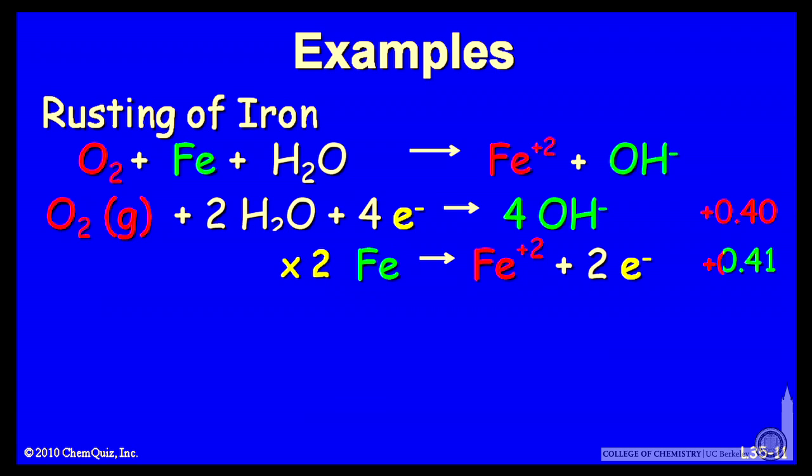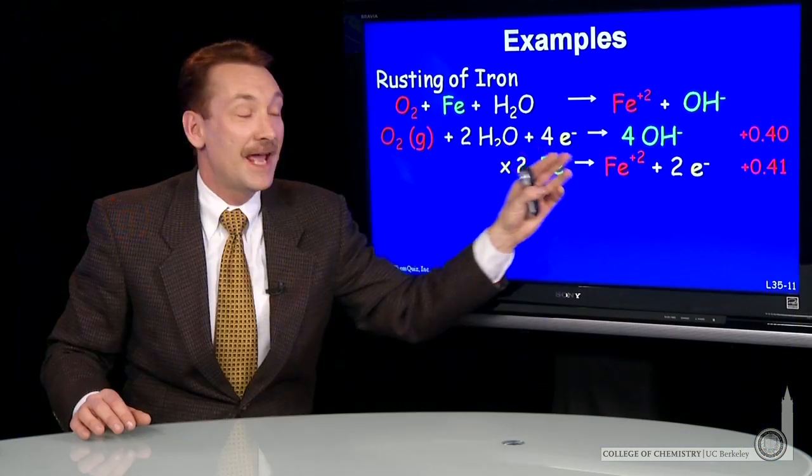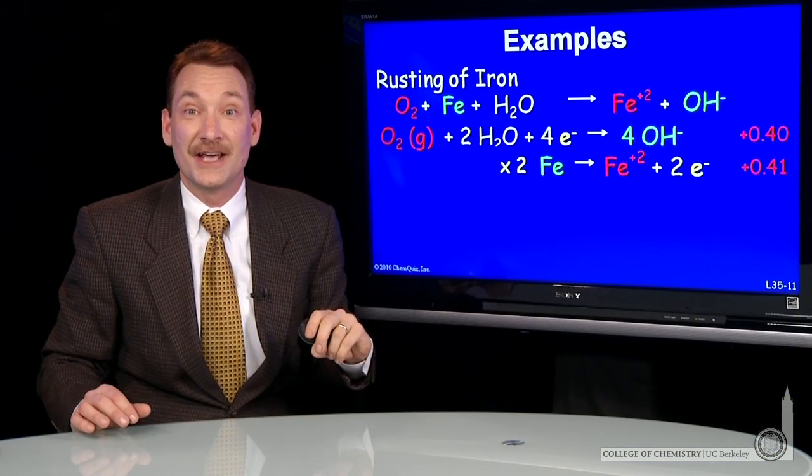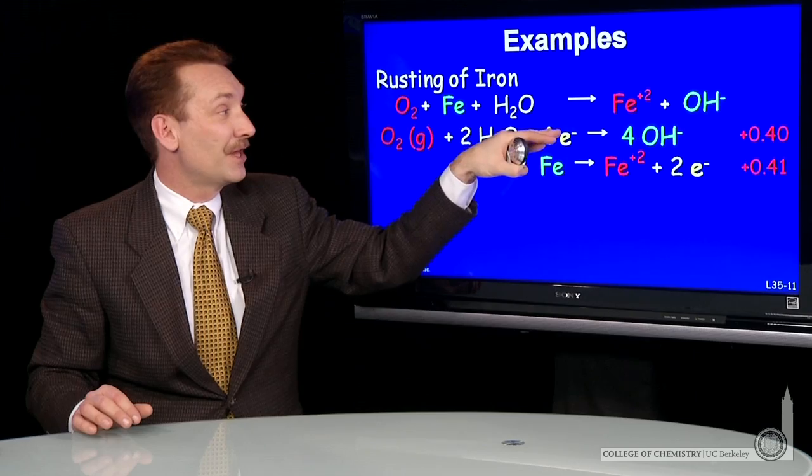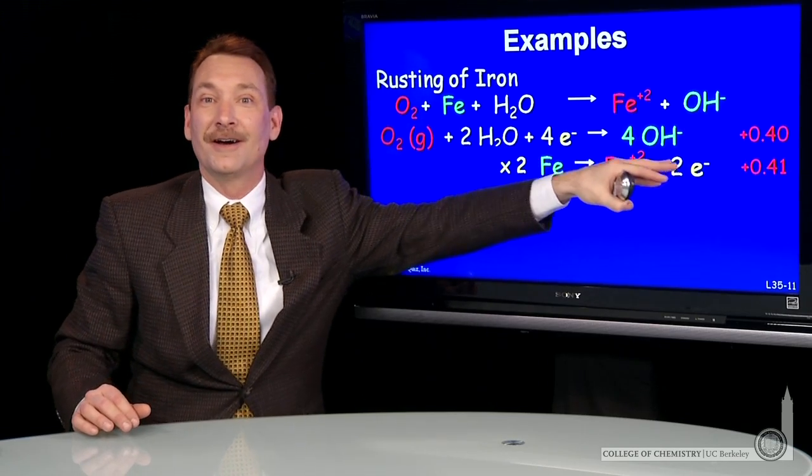Then I'm going to balance. The way I'll balance this is I'll multiply through by 2 on the iron and reverse it so it's an oxidation. I multiply through by 2 so that the electrons are canceled.